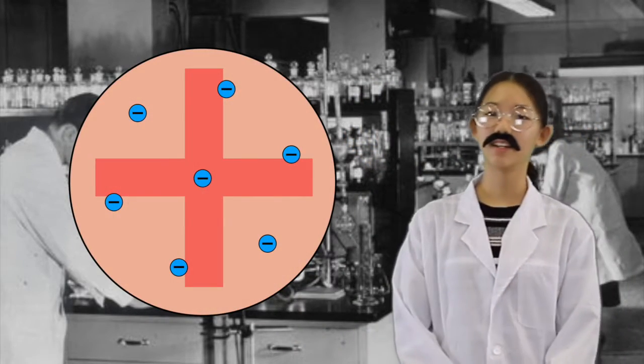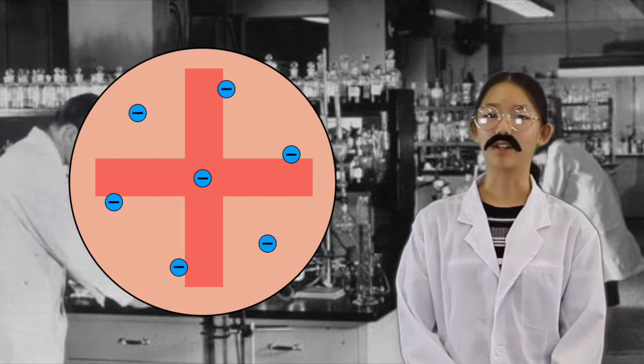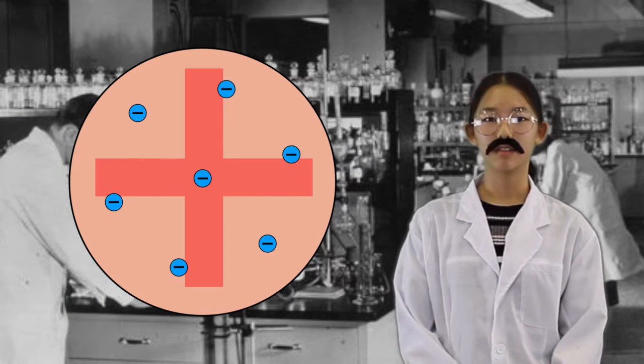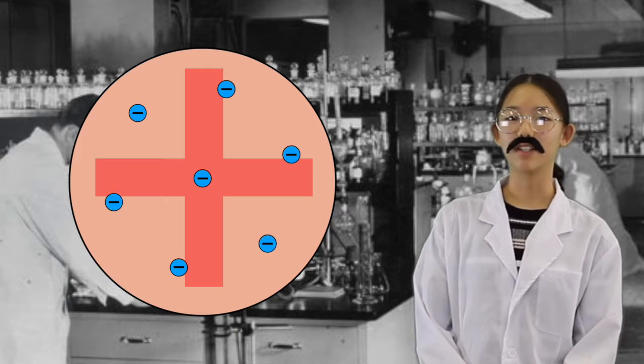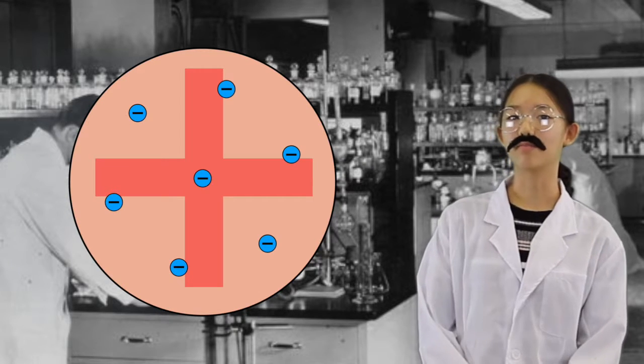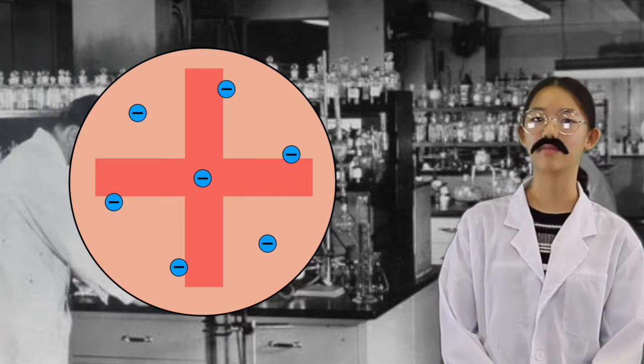And this was how my model looks like. The model is called Plum Pudding Model. The whole atom is positively charged, and the negatively charged particles are the blue small particles which are inside the positively charged atoms, just like plum in a pudding.